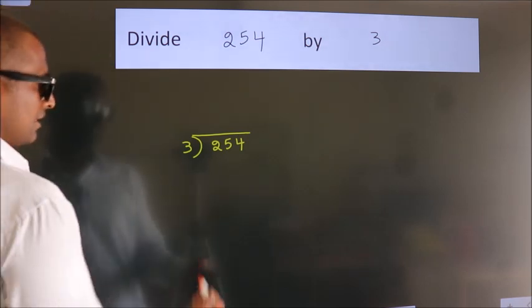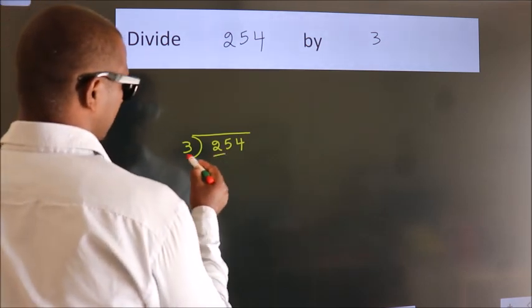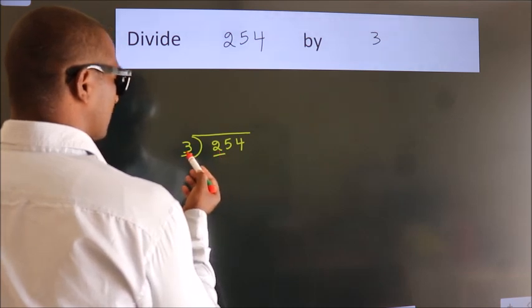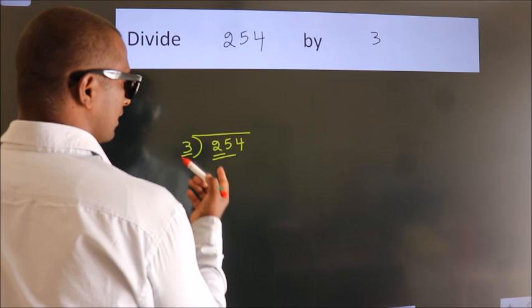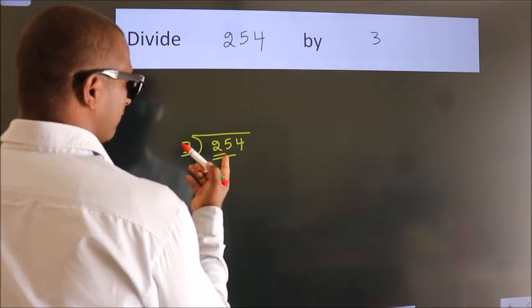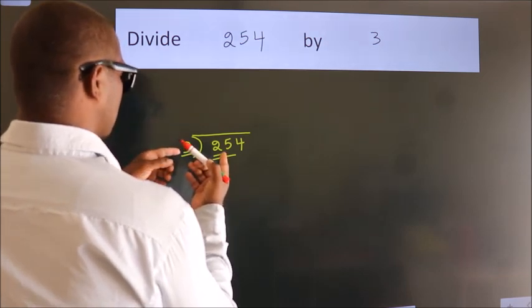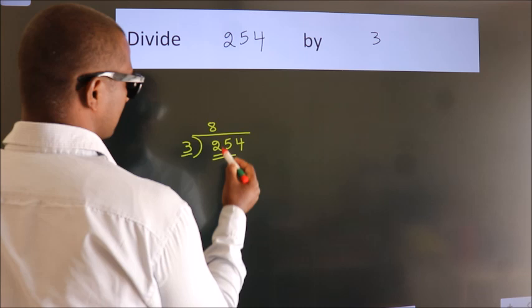Next. Here we have 2, here 3. 2 is smaller than 3, so we should take 2 numbers: 25. A number close to 25 in the 3 table is 3 times 8, which is 24.